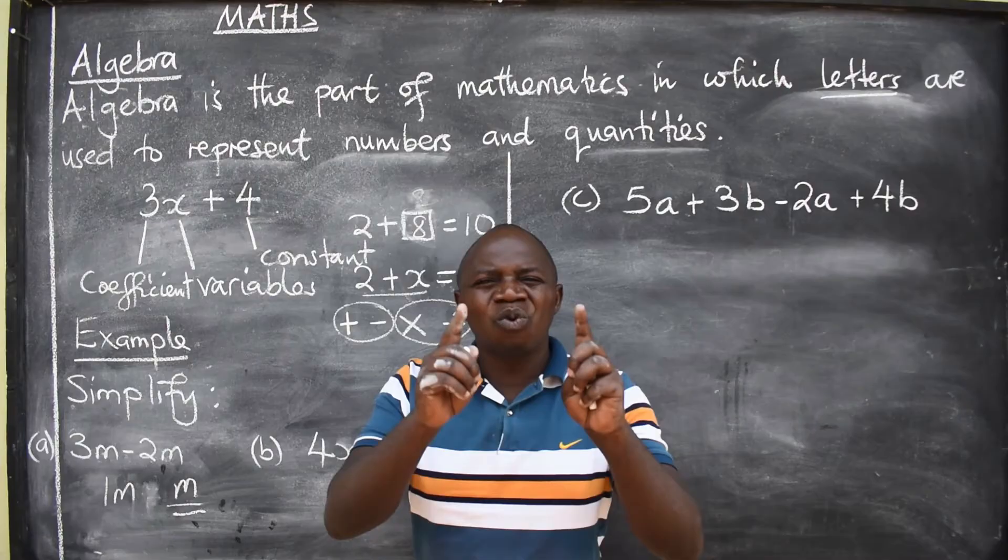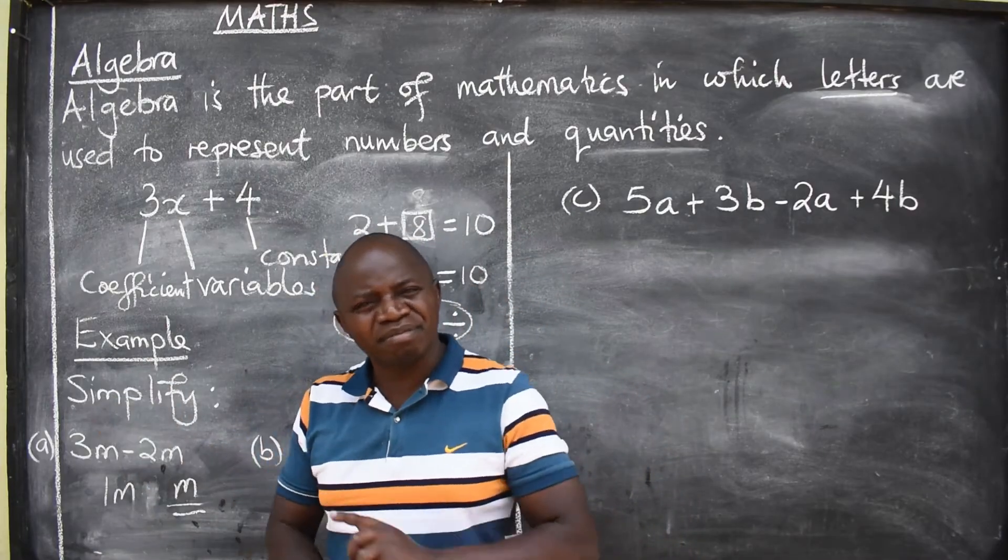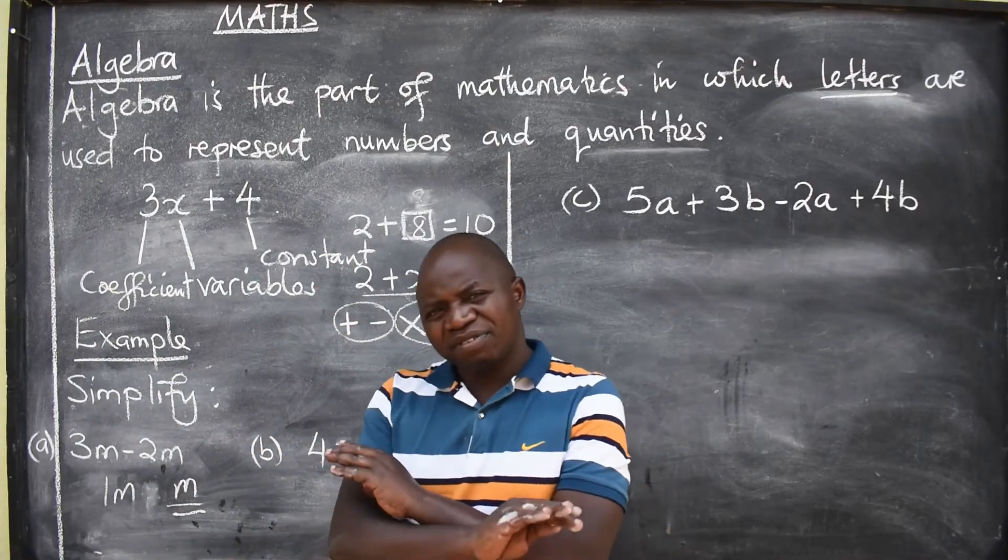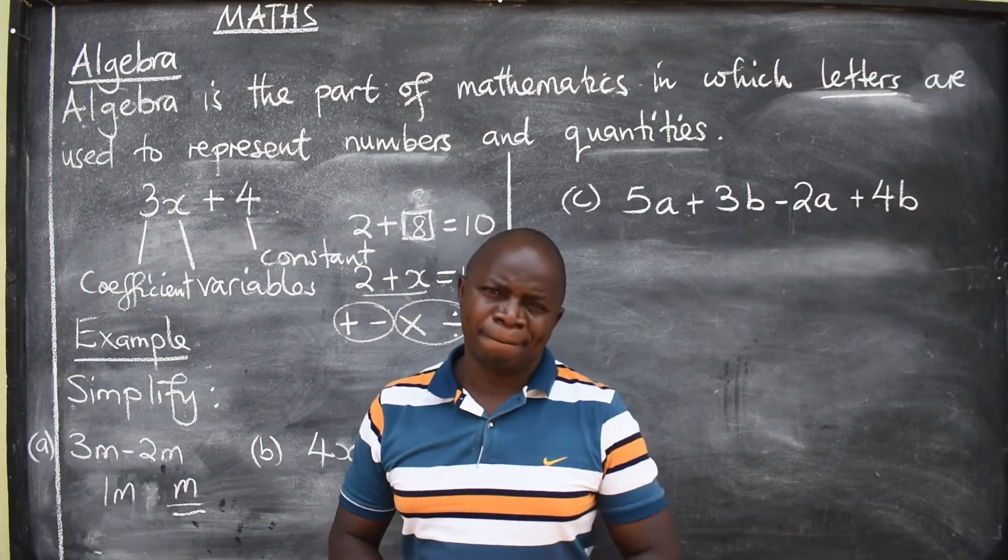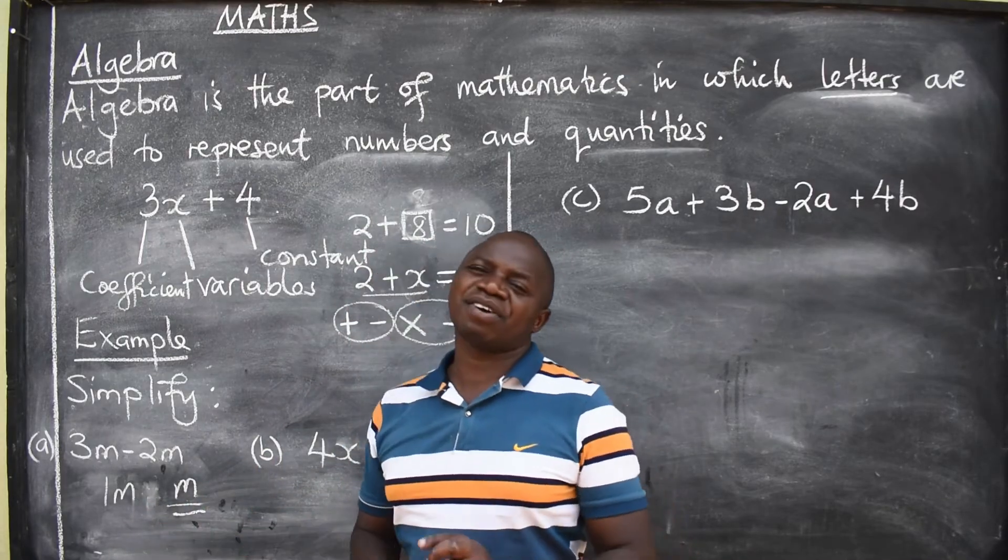Don't write 1X, 1Y. Just say, if it's X, you just say X. If it's M like this, you just say M. So this is the correct answer.